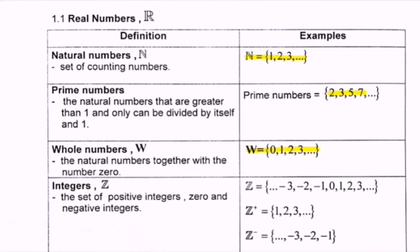Next we have the integer, which is denoted as capital Z. The definition is the set of positive integers — 1, 2, 3 — together with 0 and the negative integers. In the integer, we have the positive integer and the negative integer. It does not include the decimal point or fractions.